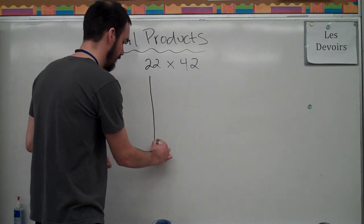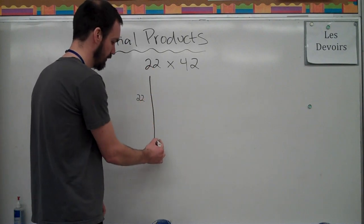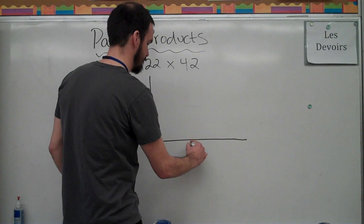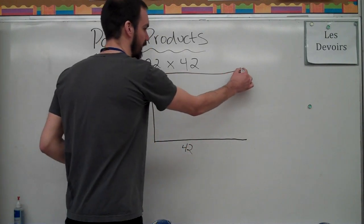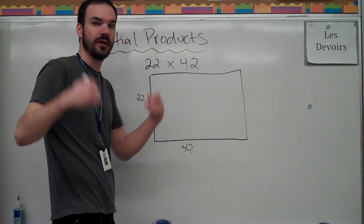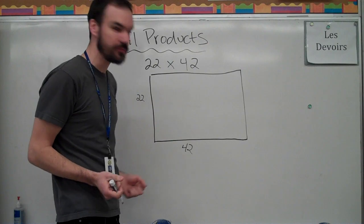So, I'm going to create, there's my 22 down here, and let's say that's 42 here. So basically, I'm creating a rectangle. Now, what I want to do is I want to chop it up into numbers, or compatible numbers, that make sense to me.